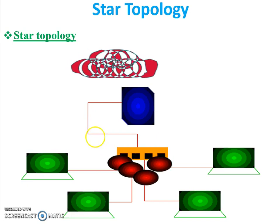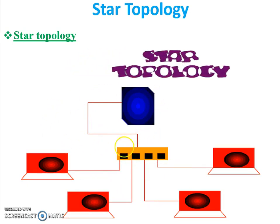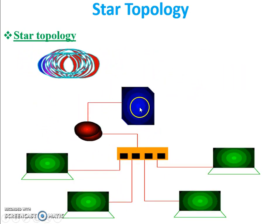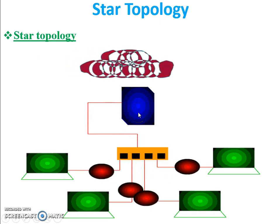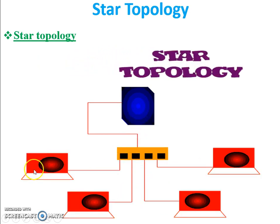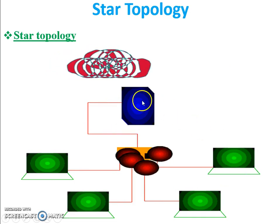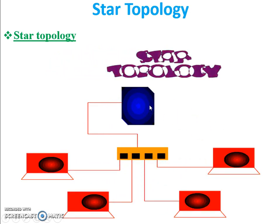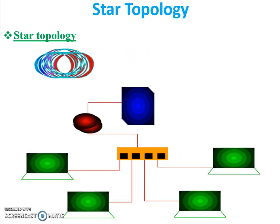Now, this is the animation of star topology. As you can see, this is the sender — the sender broadcasts the data and all other receivers get the broadcasted data. This is the animation demonstrating how star topology works.